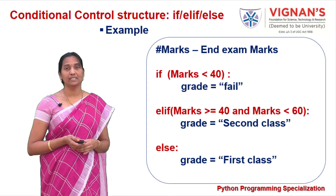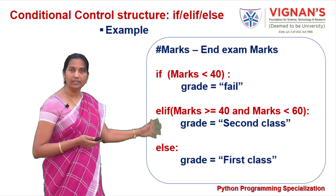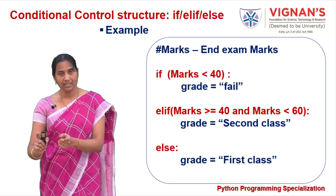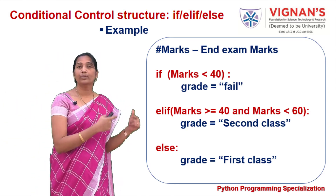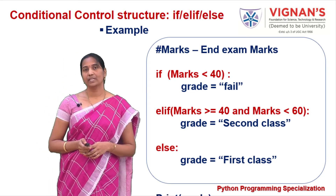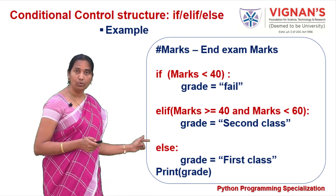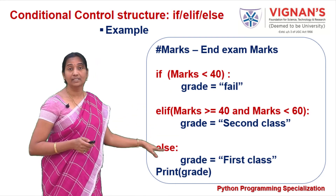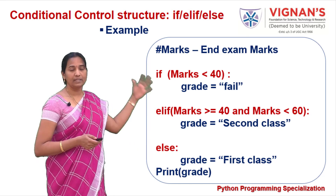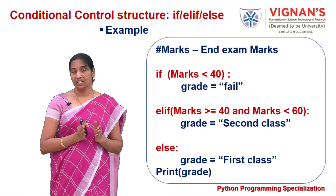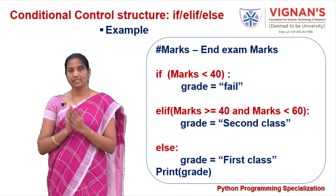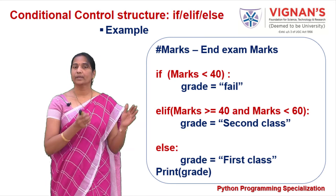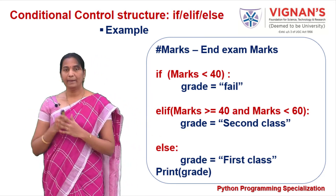This is how you can choose one of multiple paths. At any point in time, the student gets either fail, second class, or first class — not more than one. After executing either block 1, block 2, or block 3, the statements after the else are executed irrespective of which block was chosen. You can use conditional control structures to select one of the possible paths of execution.